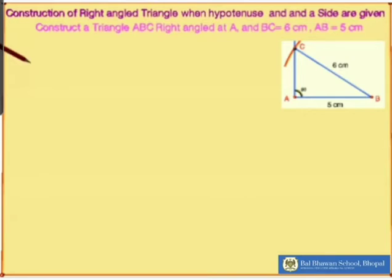So firstly, I am going to draw a rough figure for this. I have taken AB as my 5 cm base. I am going to construct a 90 degree angle at A, and the hypotenuse, i.e., the longest side of the triangle, as 6 cm.